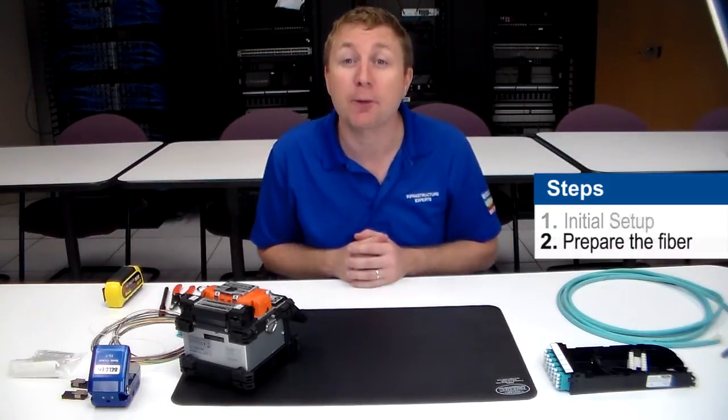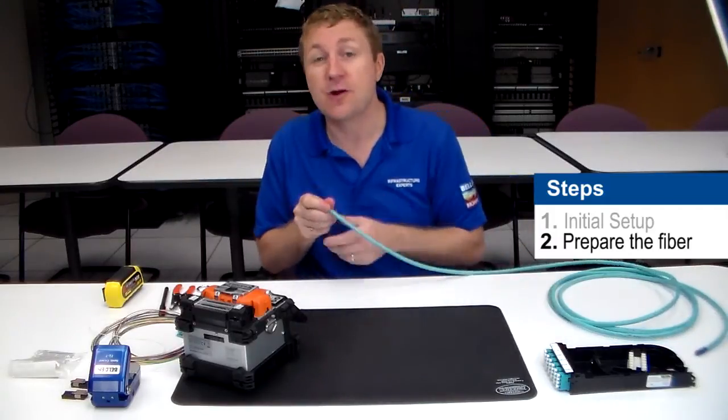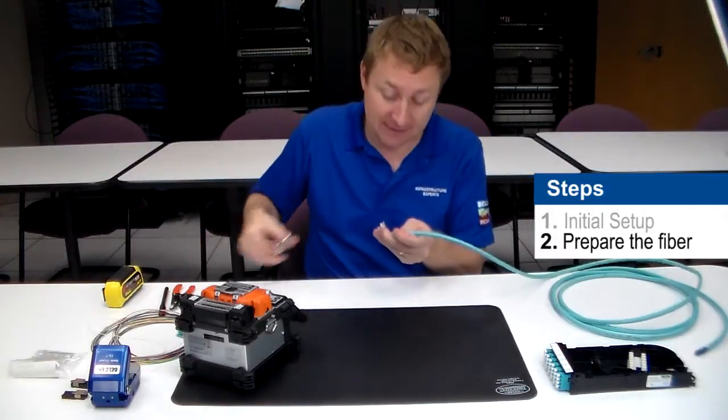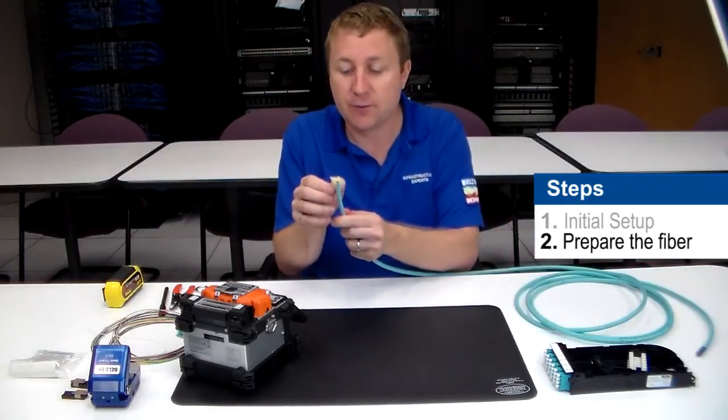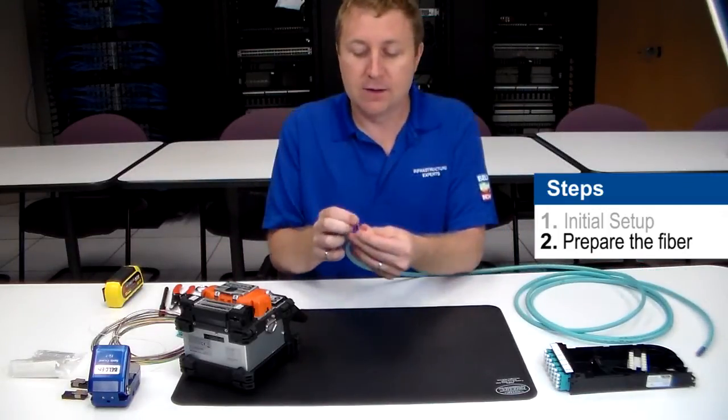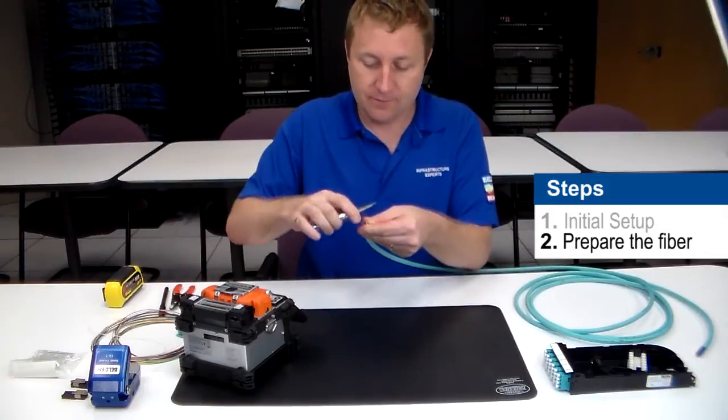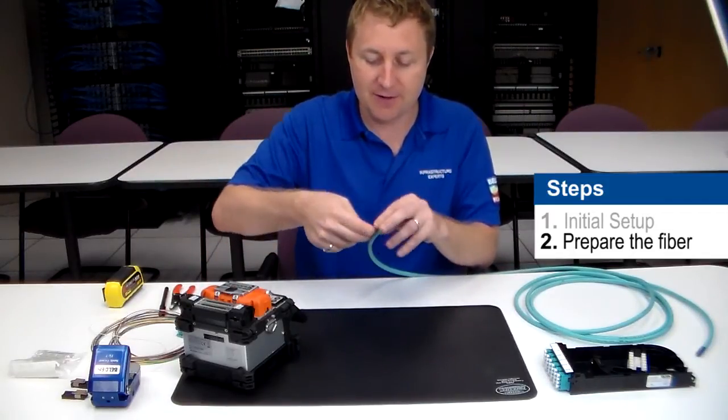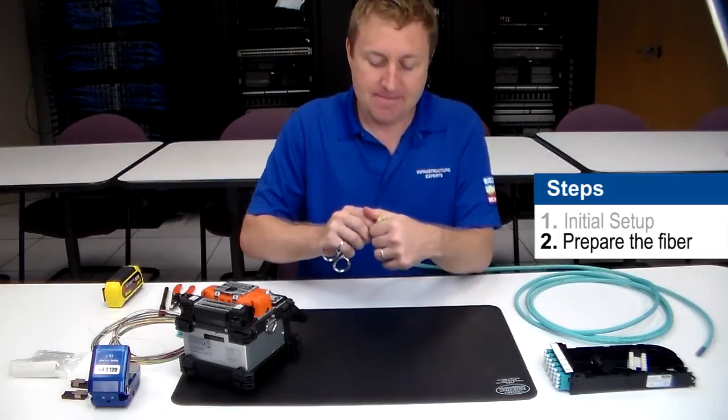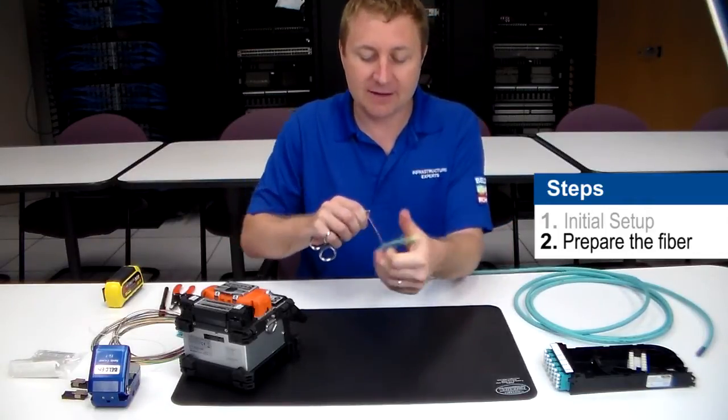My next step, I'm going to want to prepare my fiber. So I need to prepare both my trunk and my pigtail. First thing I'm going to do is put a small cut in the jacket to expose the ripcord. Now with the ripcord exposed I'm going to use my Kevlar shears and I'm going to wrap it around to save my fingers and I can tear the jacket of the cable.